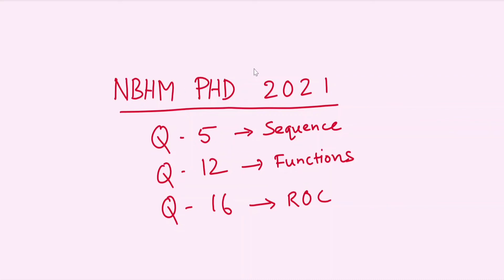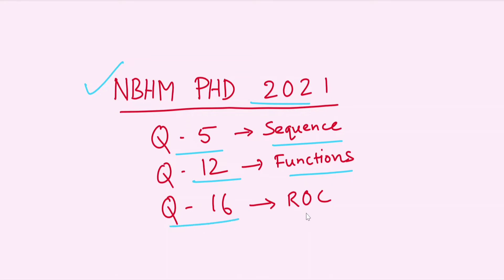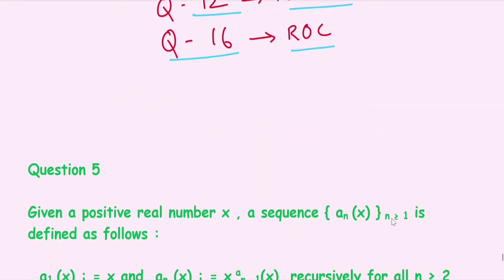Hello everyone, welcome to Math with Smart Tips. Today in this video we are solving questions from NBHM PhD 2021: question number 5 which is from sequences, question number 12 which is on functions and their properties, and question number 16 which is from radius of convergence. Please like the video, comment if you have any doubt, and don't forget to subscribe the channel.